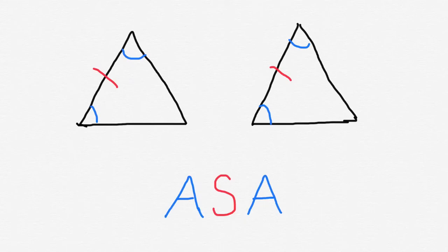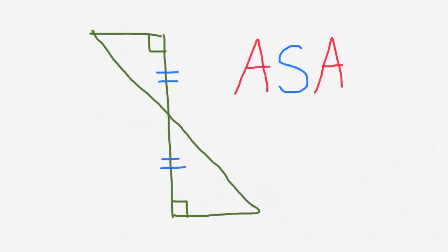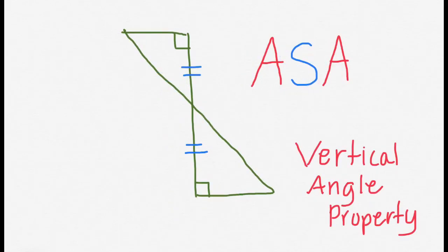These two triangles represent the Angle-Side-Angle postulate. You have two angles — one here at the bottom — then you have a side indicated by the red mark, and then another angle. The order of which these lie is important: angle, side, angle. Here we have two triangles that are connected. We can see with the right angle we have an angle, then with the two dashes we have a side, and again we have a vertical angle. The vertical angle is here and here, giving us angle, side, angle on both. So this fits the Angle-Side-Angle postulate.